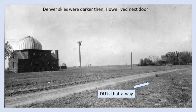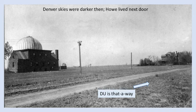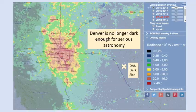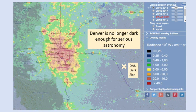Denver skies were of course darker then and there were no other nearby buildings except Howe's home. Of course, today Denver is too light polluted for serious astronomy and our nearest dark site is over an hour's drive away.